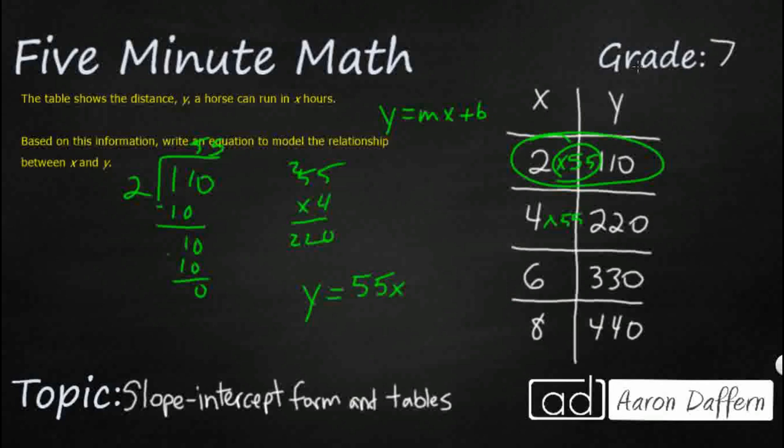And I have a plus zero. I don't need my intercept form because I'm not adding anything to it. When a horse starts at zero, it's got zero distance.